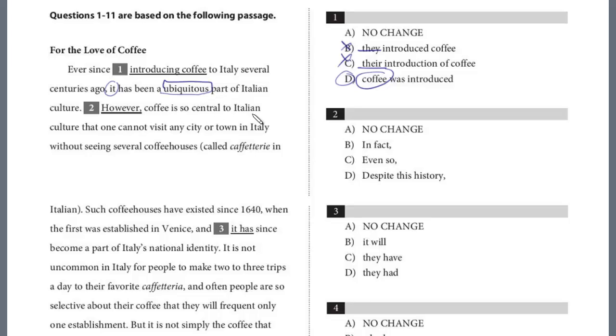However, coffee is so central to Italian culture that one cannot visit any city or town in Italy without seeing several coffee houses called caffetterie in Italian. Such coffee houses have existed since 1640, when the first was established in Venice, and it has since become a part of Italy's national identity. So, we have a couple of questions. Two is a transitional question, however, that indicates contrast, coffee is so central. In the first sentence, though, we read that it's ubiquitous, it's a prevalent part of the culture, and it's so central. This is reinforcing the first sentence, it's not giving contrast.